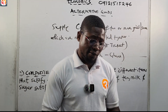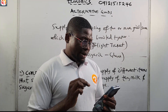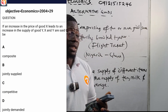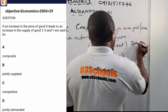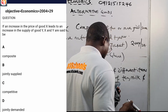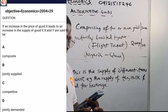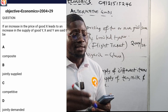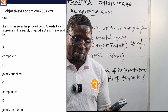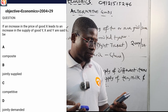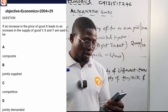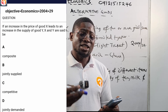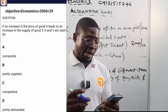Let's go to the Old Three Schools app and answer some questions. The 2004 question number 29: 'If an increase in the price of good X leads to an increase in the supply of good Y...' — you should already know that is joint or complementary supply. The options are A: composite, B: jointly supplied, C: competitive, D: jointly demanded. The correct answer is B — jointly supplied.